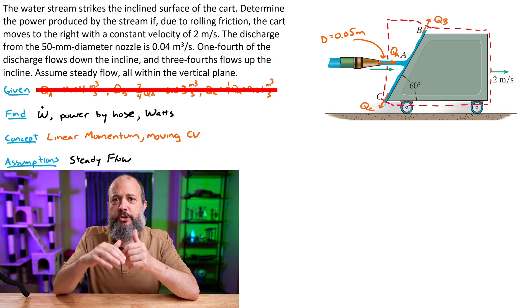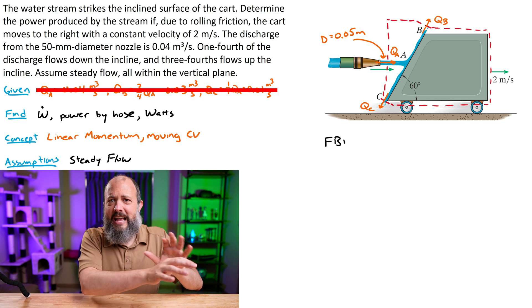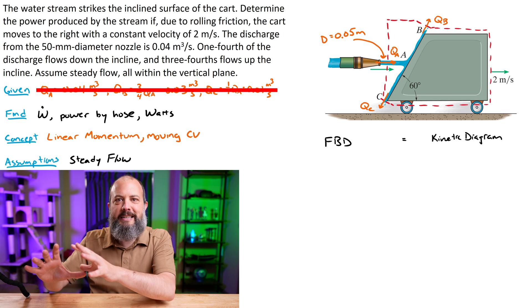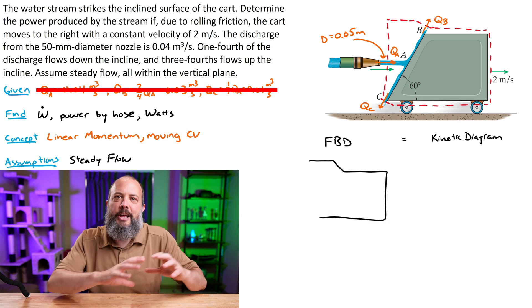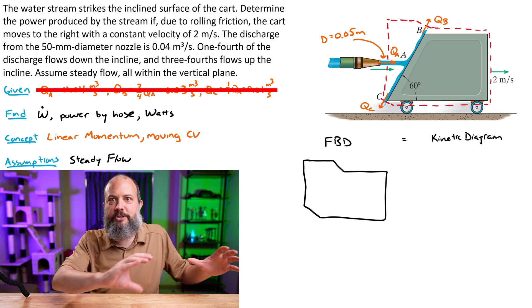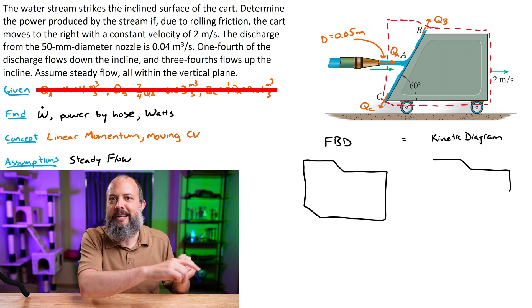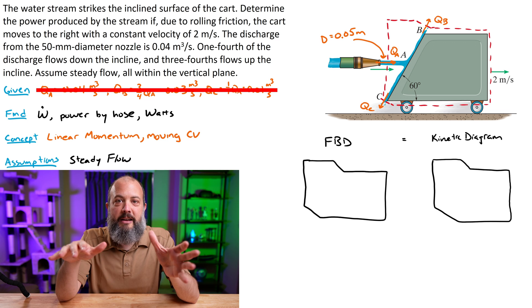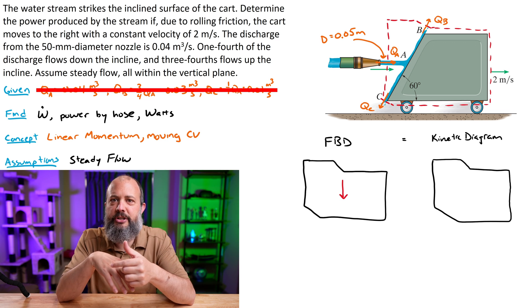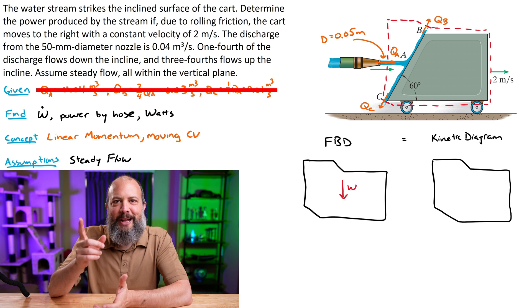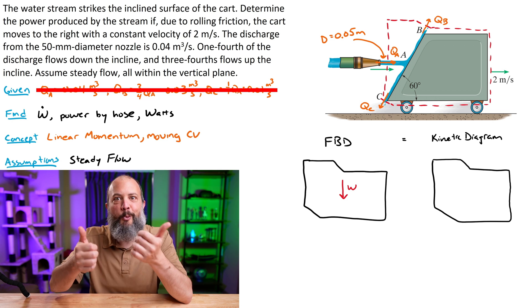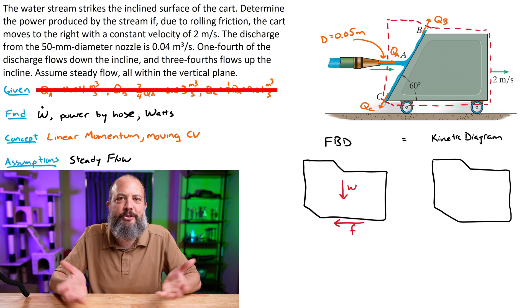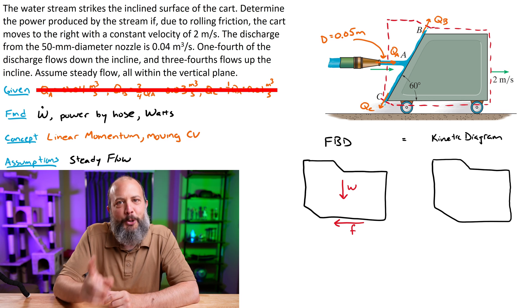Next, momentum problems are force problems, just like F equals MA back in your dynamics class. Draw a free body diagram and a kinetic diagram. The free body diagram has all of your surface and body forces. In a free body diagram, you just have weight pointing down, friction pointing back to the left, and there should also be a normal vector pointing upwards from the ground, which I forgot to draw. But in this problem, it ends up not mattering since we're only interested in the horizontal left to right direction. But yeah, there definitely should be an upward pointing normal force here.